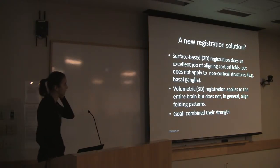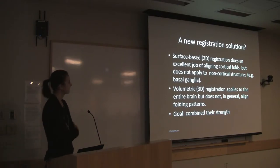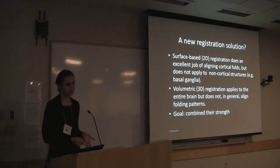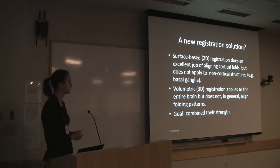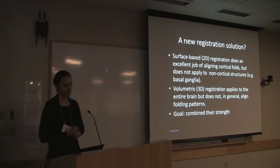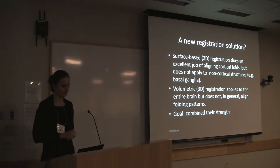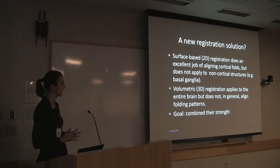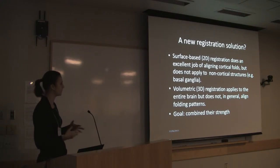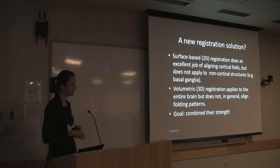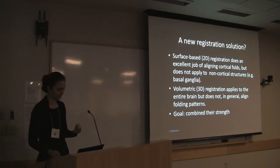So why am I introducing yet another registration solution? We have told you about the advantages of surface-based registration — it does an excellent job aligning cortical folds. However, it does not apply to non-cortical structures. There are plenty of volumetric registration solutions in the literature and they do a great job overall aligning different brain structures, but in general they have a hard time aligning folding patterns. So we wanted a solution that combines the strength of these two different registration strategies and aligns both the cortical and subcortical areas for further analysis.